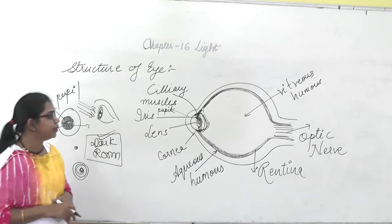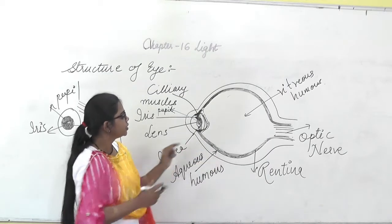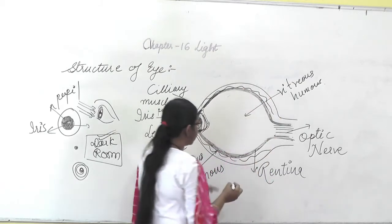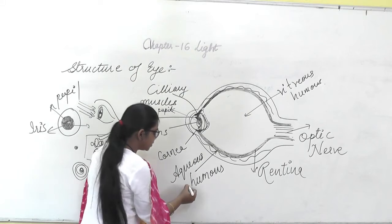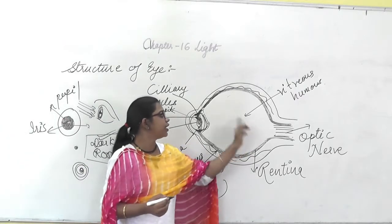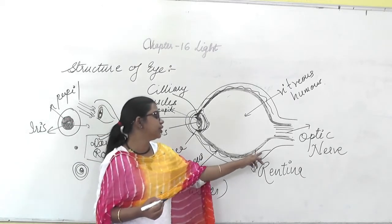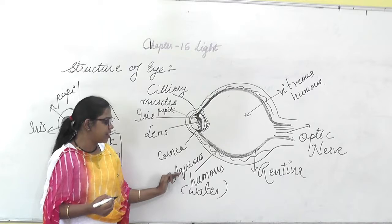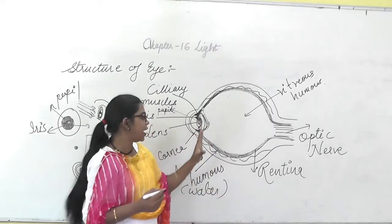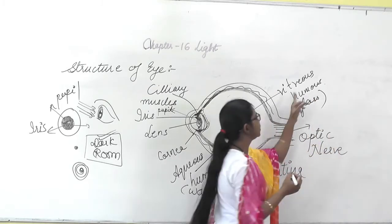Now, the outer layer contains a water-like structure known as aqueous humor. Aqueous means water, so it is named aqueous humor because it appears like a water-like structure. Similarly, the glassy-like structure inside the eye in the remaining portion appears like glass.